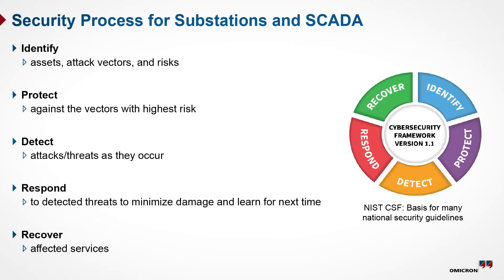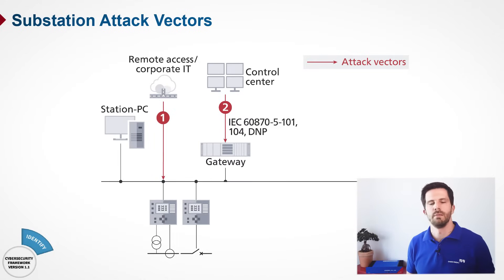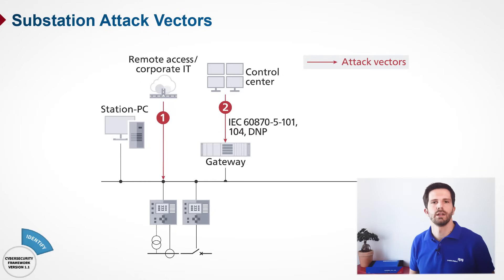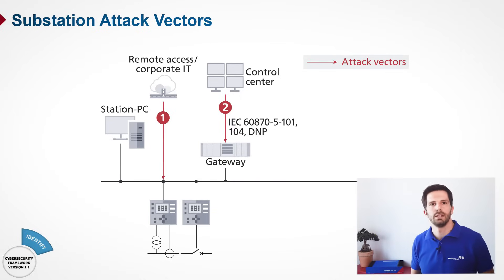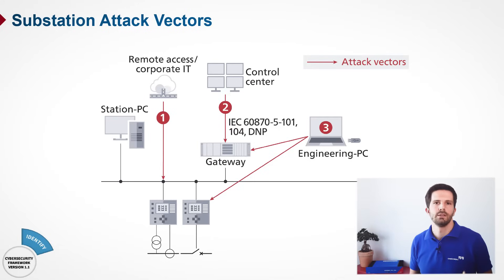Let's have a look at substations now and their attack vectors. The first two attack vectors are probably well known. Attack vector number one has been used in many cyber attacks on OT systems, including the most famous cyber attack on a substation in Ukraine in 2016. Attack vector number two is also feasible: an attack originating from the control center affecting devices in the substation is possible regardless of the SCADA protocols used.